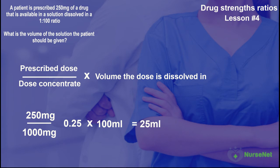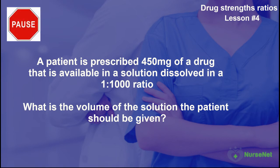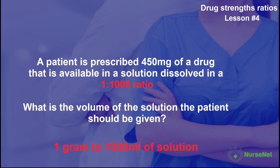Now it's your turn. A patient is prescribed 450 milligrams of a drug that is available in a solution dissolved in a 1 to 1,000 ratio. How much of the solution should the patient be given? You can pause the video and press play when you're ready to reveal the answer. Let's break this question down: the patient is prescribed 450 milligrams, and the ratio of 1 to 1,000 means that for every 1 gram of drug, there are 1,000 milliliters of solution that it's dissolved in.